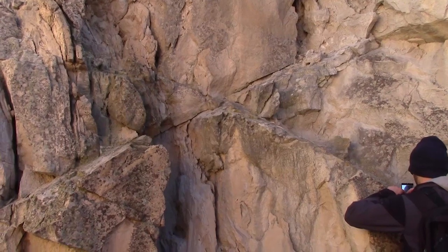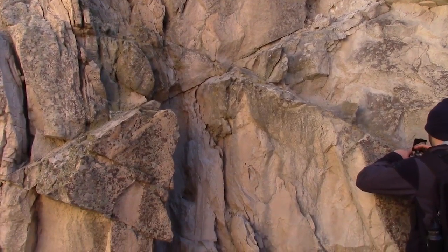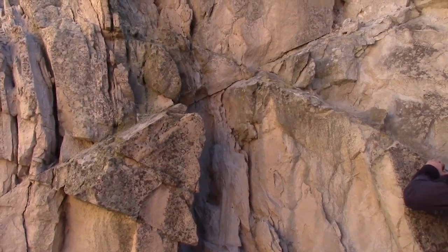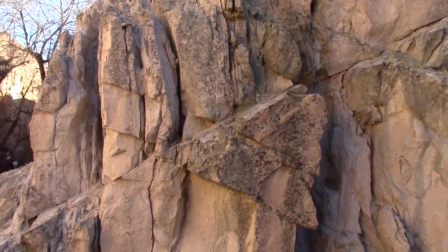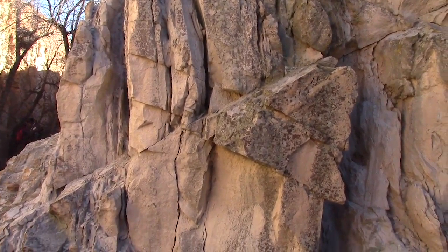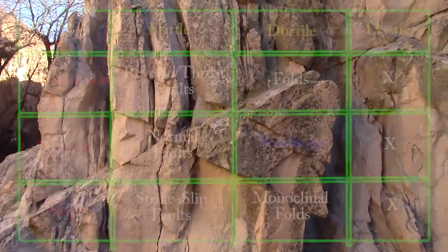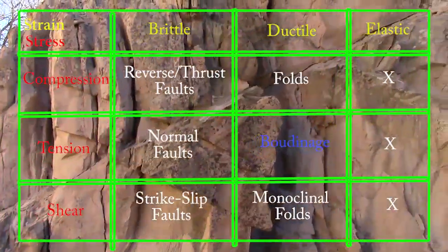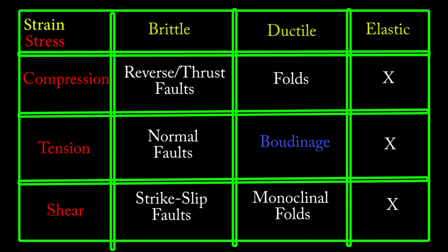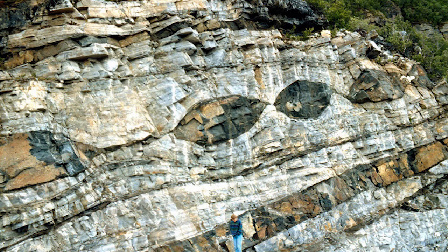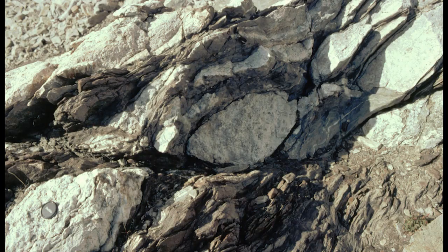As we get further into field geology, you will hear me say more and more that nature doesn't like to be pigeonholed, and that we must always keep context in mind. We have one last square to examine in our stress-strain combinations: tensional stress with ductile strain. This results in a form known as boudinage, which comes from the French boudin, meaning sausages, as this rock structure looks like a series of sausage lengths either joining or disconnected from each other.